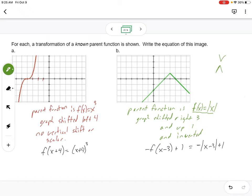Now, we can see that the graph has been shifted to the right 3, up 1, and the V is pointing downwards. So the inverted part is the negative out in front, shifting right 3 is the H value, and shifting up 1 is the K value.